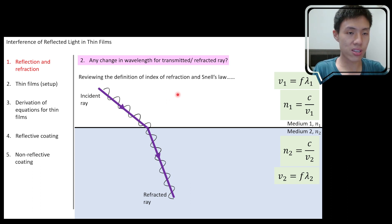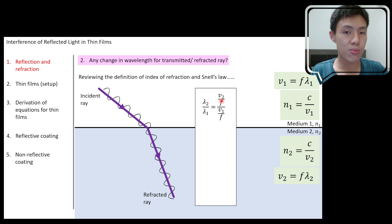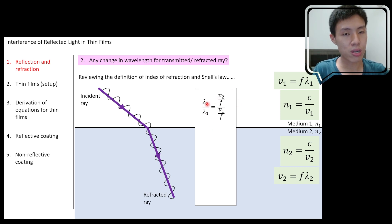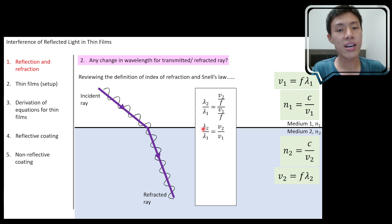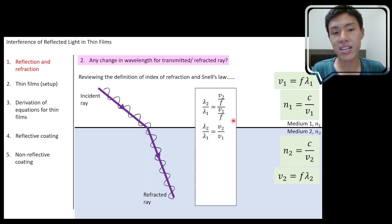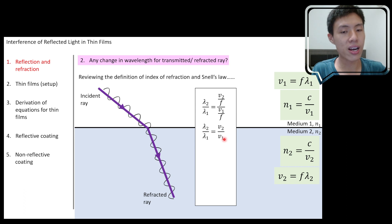Now let's continue with the derivation to find the relationship of wavelength in medium two with respect to medium one. We put λ2 divided by λ1 to find the ratio. Substituting λ2 = v2/f and λ1 = v1/f, since frequency is the same we can cancel it out. So λ2/λ1 = v2/v1. This means if you are traveling at a faster speed you have a larger wavelength, and if you are traveling slower you have a shorter wavelength.